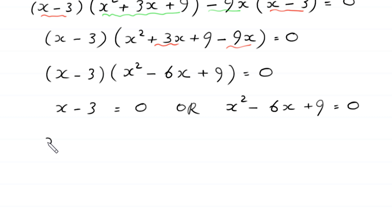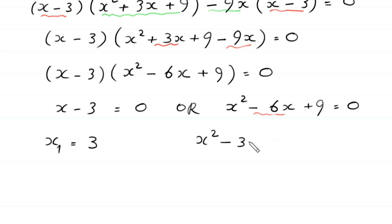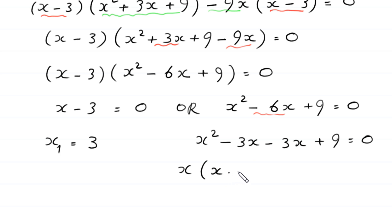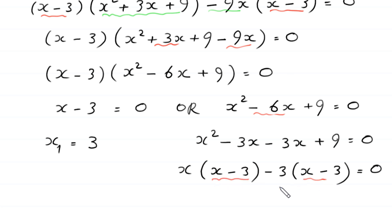From the first factor, x minus 3 equals 0 gives x equals 3. For the quadratic x squared minus 6x plus 9 equals 0, we split negative 6x as negative 3x minus 3x and factor: x(x minus 3) minus 3(x minus 3) equals 0, so (x minus 3)(x minus 3) equals 0, giving x equals 3 again.